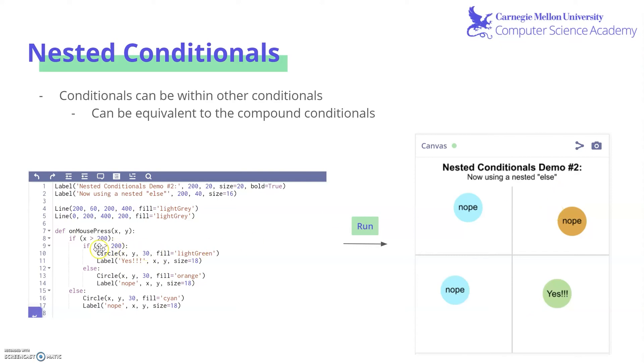But this could actually be completely converted into compound conditionals. So instead of having two if statements, one inside the other, you can just have one and connect the two conditions with and. So it could be written as if x is greater than 200 and y is greater than 200, draw a light green circle with the label yes.